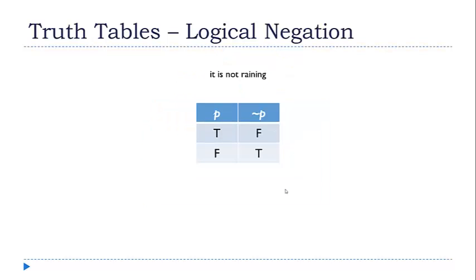That brings us to our last base table: the logical negation. This is much like a minus sign in algebra — it has the effect of reversing whatever comes after it. If a person said 'it's not raining' and you looked outside and it was, you would say their statement was false. If they said 'it's not raining' and in fact it really wasn't raining, you would say they made a true statement. So the truth table for a logical negation just reverses the value of whatever came before it.